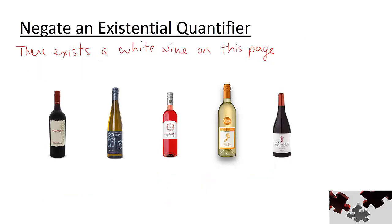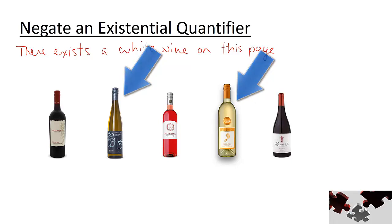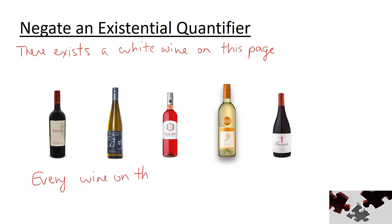Our statement involving an existential quantifier from before was: there exists a white wine on this page. This statement is true — there are actually two white wines on this page. To negate it, since our claim is about one or more of the wines being white, we would require a claim about every wine being not white. For example, every wine on this page is not white. Take a moment to show yourself that this negated statement is indeed false.